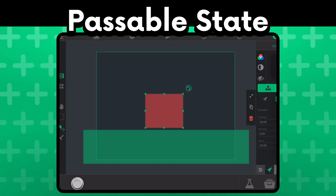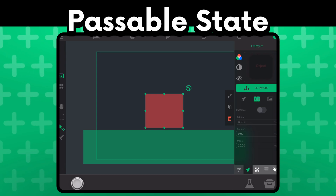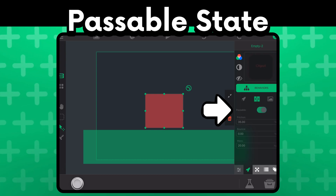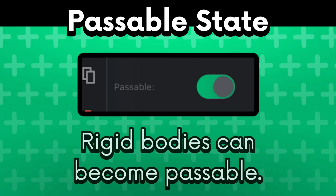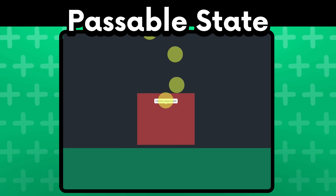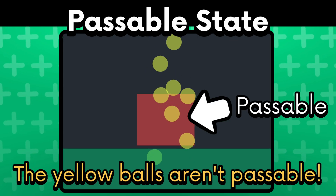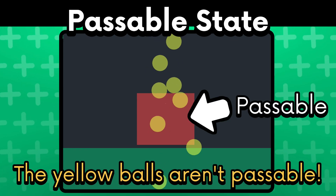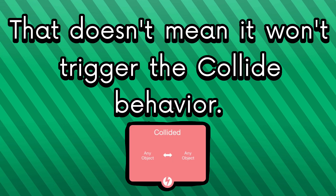Because wall and physics objects are rigid bodies, there is a toggle for them to be passable. When an object is passable, it can pass through all objects and ignore physical collision. But that doesn't mean it won't trigger the collide behavior.